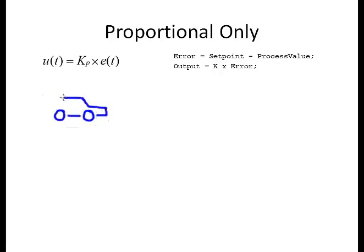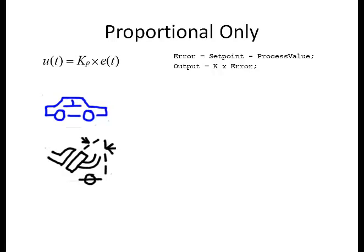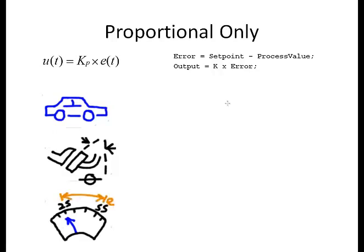To visualize this controller in action, let's imagine that a proportional controller is driving a car. The output of the controller sets the position of the gas pedal. We define the output as the angle theta, and when theta equals zero, the pedal is slightly depressed, causing the car to travel 25 miles per hour. But we want to travel 55 miles per hour, so that becomes our set point. The initial error is the distance on our speedometer between how fast we are currently moving and how fast we want to go.